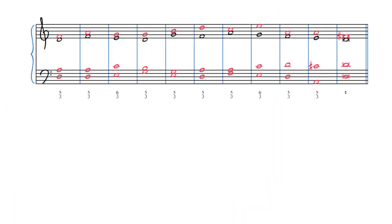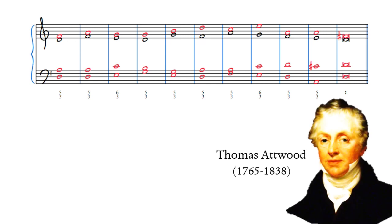Let's start by looking at an example of a four-voice exercise by Thomas Atwood. When Atwood was about 20 years old, he traveled to Vienna to study counterpoint with Mozart, and this exercise, using Fuchs's Dorian cantus firmus, is from those studies. Before we get to Mozart's corrections, let's listen to Atwood's exercise and break it down.